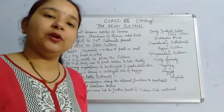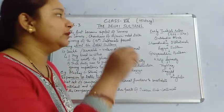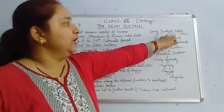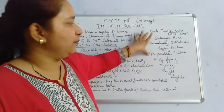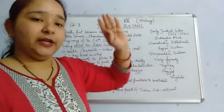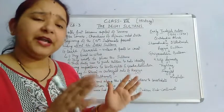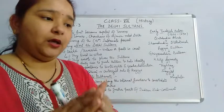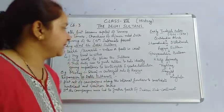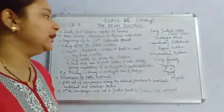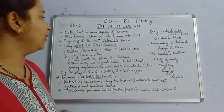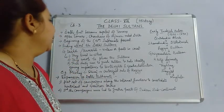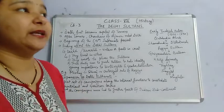Table one is given in the book which provides details from 1200 to 1290 — that was the time period of the Slave Dynasty. In that table you will see the timeline showing which dynasty ruled and for how many years. Please go through that table.